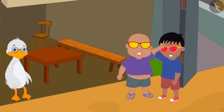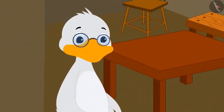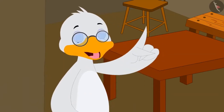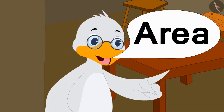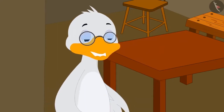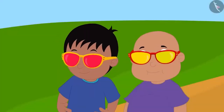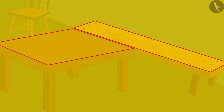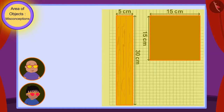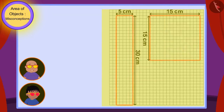Seeing both of them quarrelling, uncle asked the reason. Uncle explained that if you want to find out which table is bigger, all you need to do is find the area of the two tables — the table with more area is the bigger one. Then Bablu looked at the surfaces through his glasses and could see a grid paper forming on the surfaces. He told Raju they could find the area of the surfaces with the help of these grids.